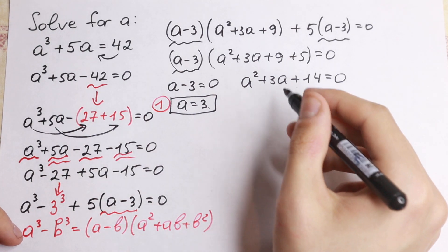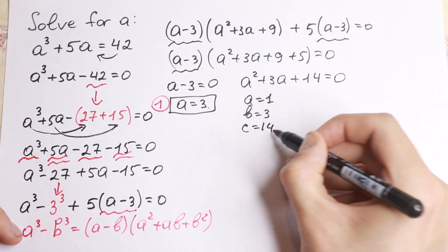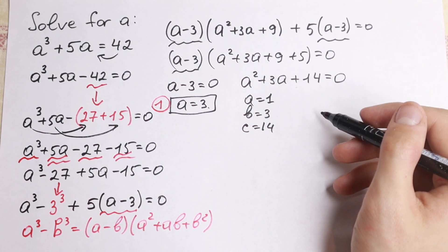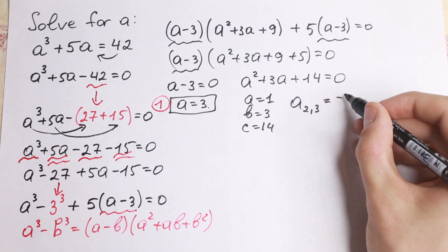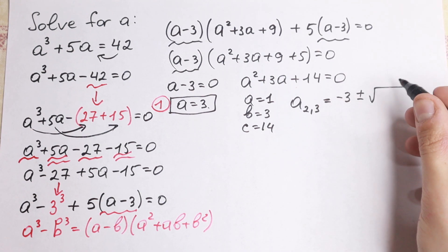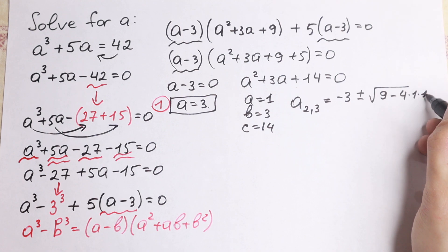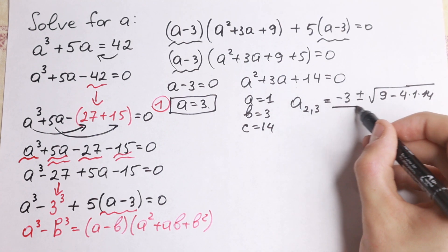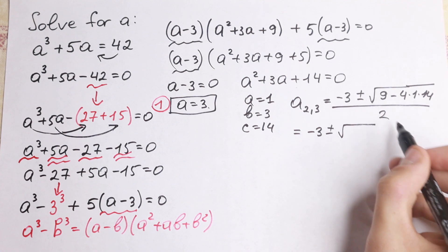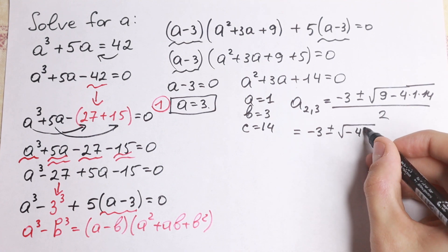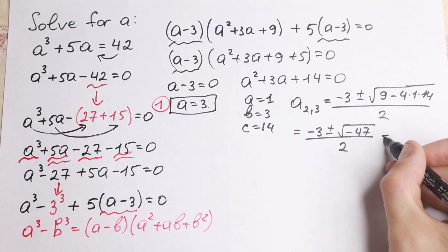Now let's find the other roots from a squared plus 3a plus 14 equal to zero. We have a equals 1, b equals 3, and c equals 14. Plugging into the quadratic formula: a equals minus b plus or minus square root of b squared minus 4ac, all over 2a. That gives minus 3 plus or minus square root of 9 minus 56, which is minus 47. This signals complex roots.